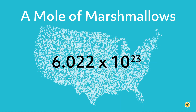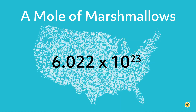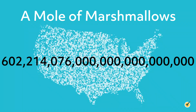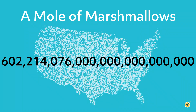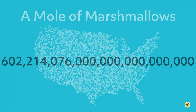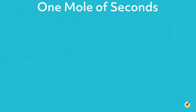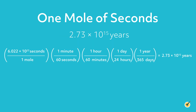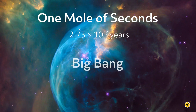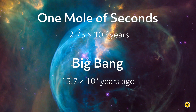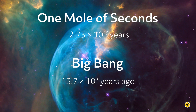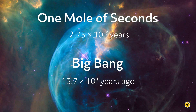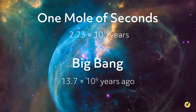Obviously, this is a ridiculous number of marshmallows to have — that's a lot of zeros. It's such a large number that our poor human minds have trouble comprehending it. Think about a mole of seconds: that's about 600 sextillion seconds, which ends up being 2.73 times 10 to the 15th years. Some scientists believe the Big Bang only happened 13.7 times 10 to the 9th years ago, so the universe isn't even a mole of seconds old. That's how large this number is.